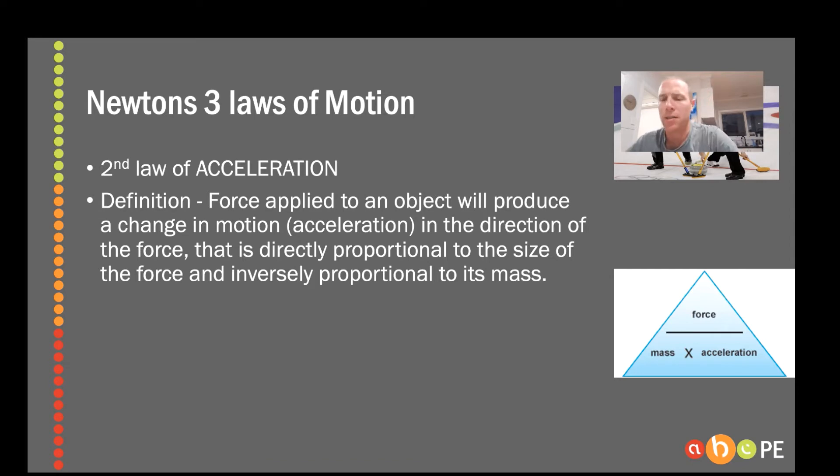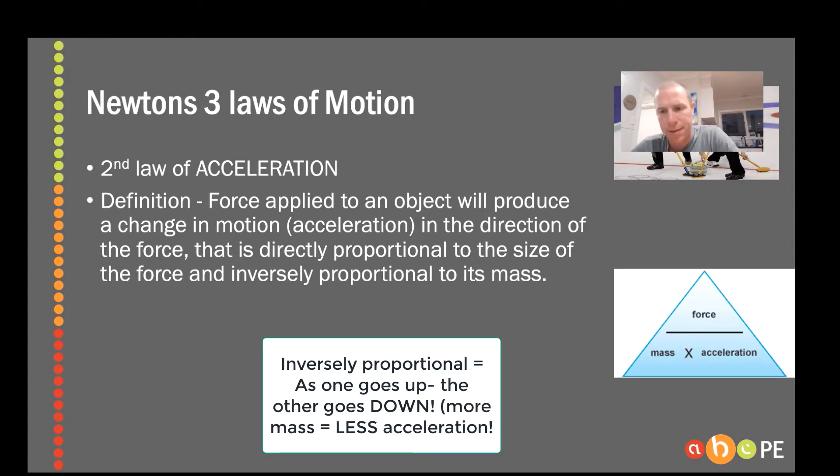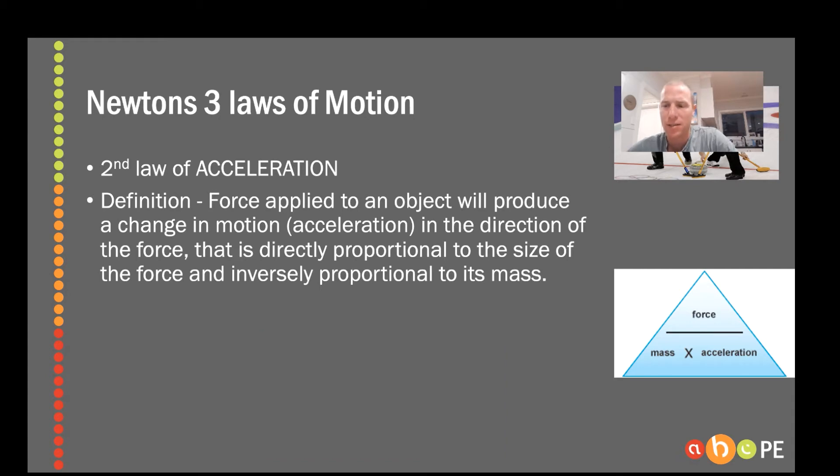Conversely, inversely proportional to its mass means the heavier the object, the lower or the slower the acceleration will occur. So as one goes up, the other one goes down. As mass increases, acceleration will actually decrease, and we'll give you an example of that in a second.